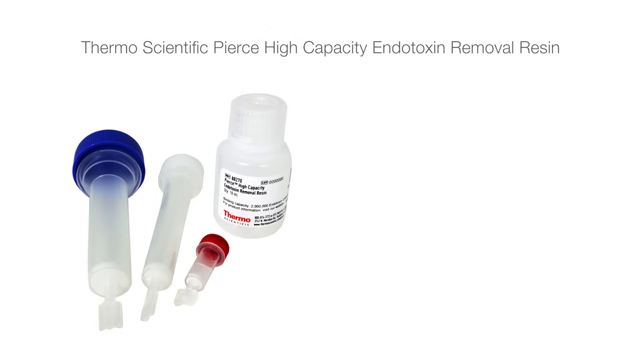For efficient endotoxin removal, use the Thermo Scientific Pierce High-Capacity Endotoxin Removal Resin, which is a poly-epsilon lysine affinity resin that displays both excellent endotoxin binding capacity and protein recovery. It is available as bulk resin or in several convenient spin column formats.